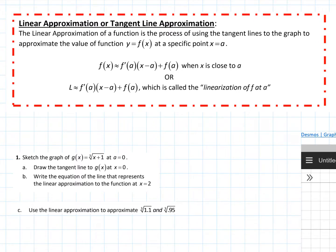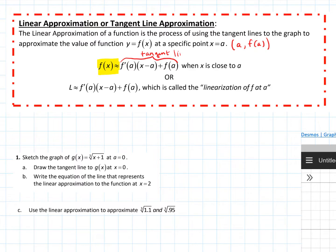That gives us our next definition. The linear approximation, or tangent line approximation, is the process of using the tangent line to a graph to approximate a value of a function near a specific point x = a, or (a, f(a)). f(x) can be approximated by its tangent line — it is approximately equal to its tangent line when x is close to a. That is called the linearization of f at a.